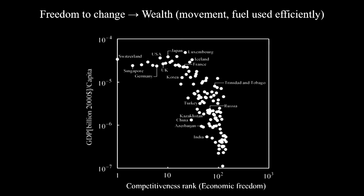Here is an additional representation of the same phenomenon of hierarchical movement on the planet. In the vertical direction we have wealth; in the horizontal direction we have economic freedom, with freedom increasing to the left. The cloud is even thinner here. We see that movement upward means an evolution of the design toward greater freedom, both in history and in the future.